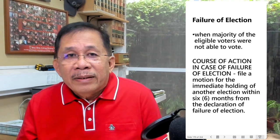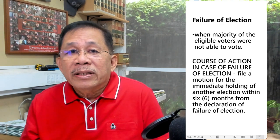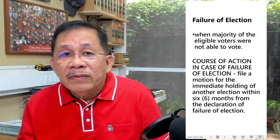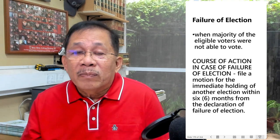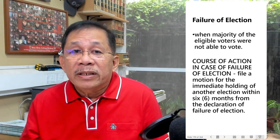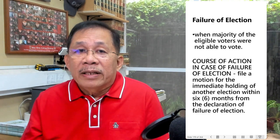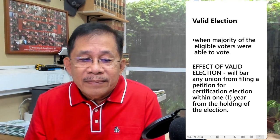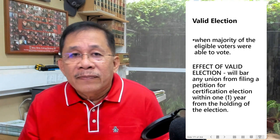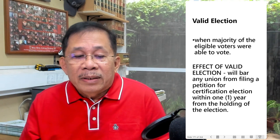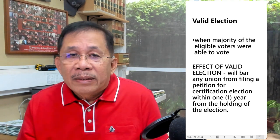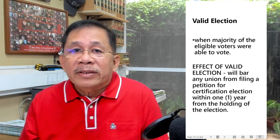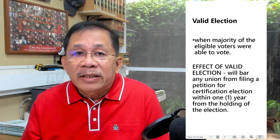There is a failure of election when the majority of the eligible voters were not able to vote. In case of failure of election, the petitioner can file a motion for immediate holding of another election within six months from the declaration of failure of election. A valid election, on the other hand, occurs when the majority of the eligible voters were able to vote. A valid election will bar any union from filing a petition for certification election within one year from the holding of the election.